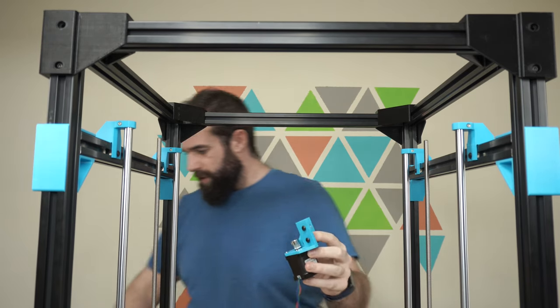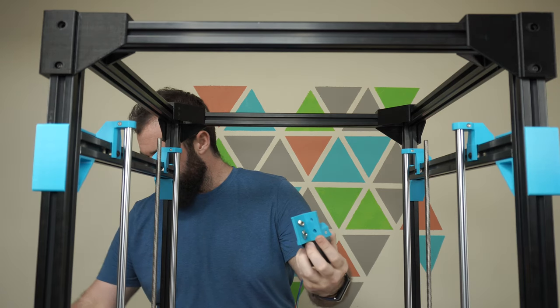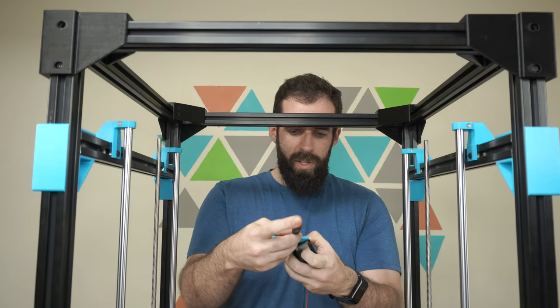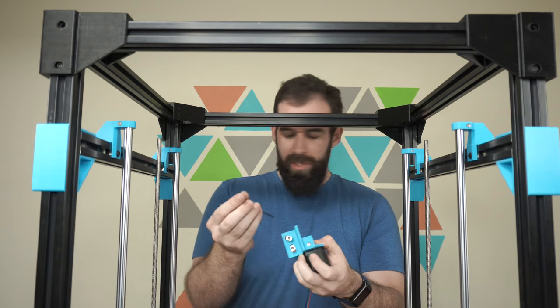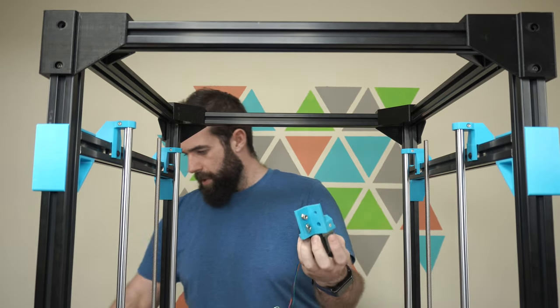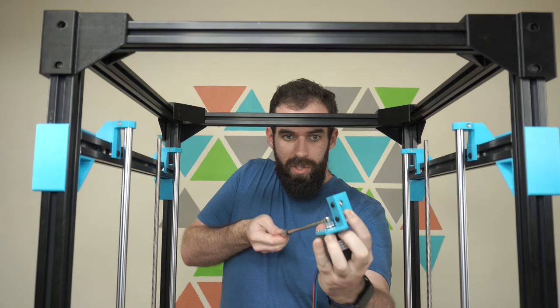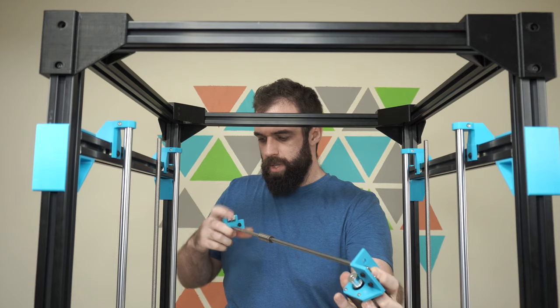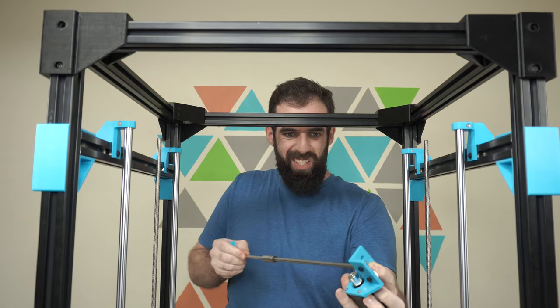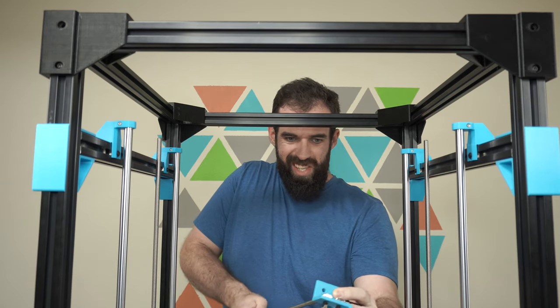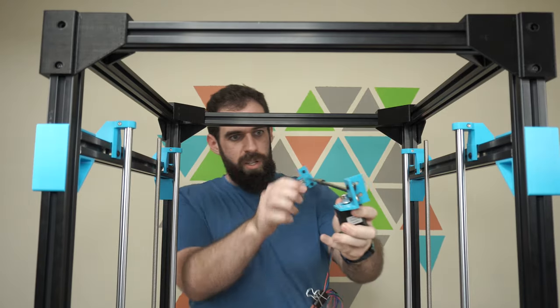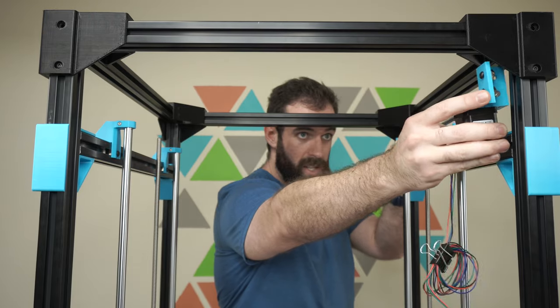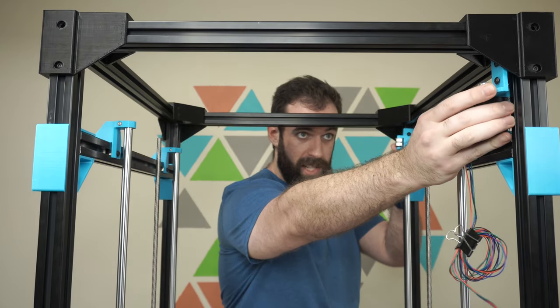When you're putting this together, all the socket head cap screws should be facing outward. That one was a little bit too tight, so I'm going to loosen it up. There we go, and then it's just going to slide right in to the side, making sure everything's lined up.